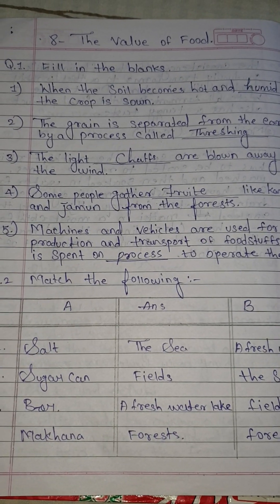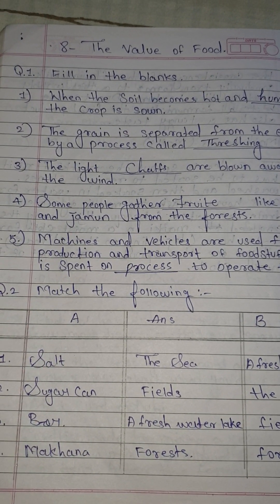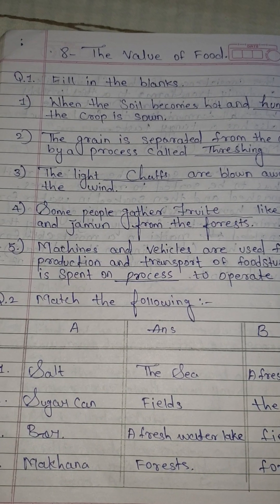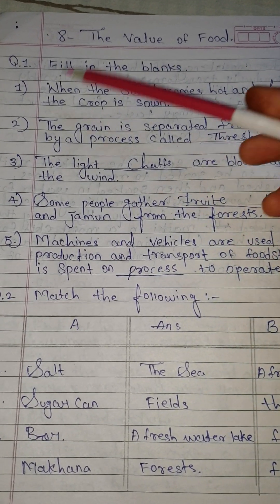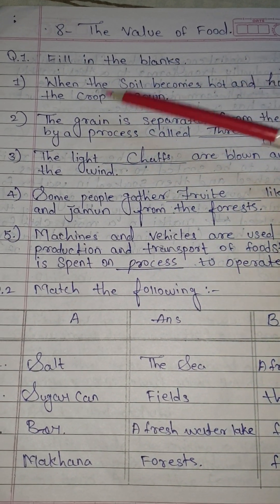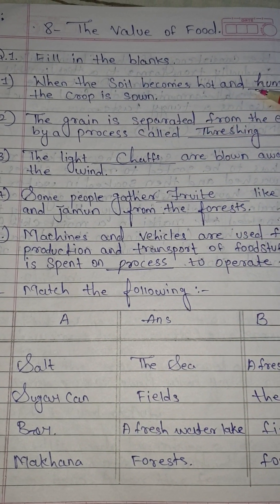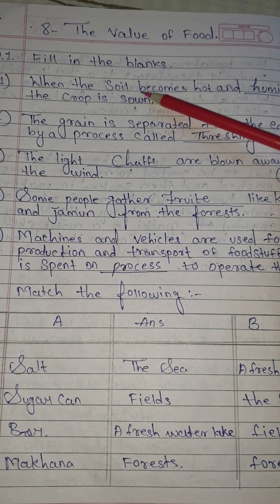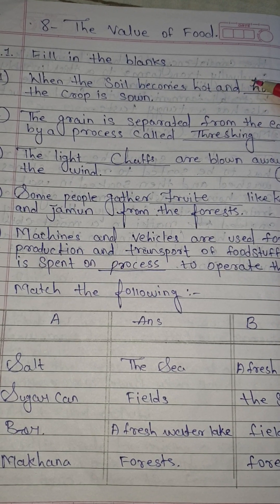Hello my dear students. Today we are going to learn EVS, Standard 4, Chapter number 8 - The Value of Food, question and answer. Question number 1: fill in the blanks. Number 1: when the soil becomes hot and dash, the crop is sown.